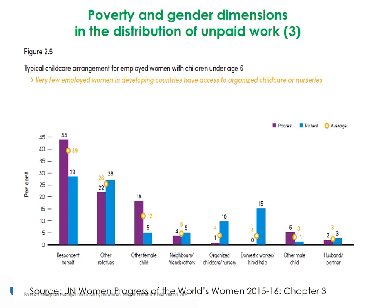Still on the theme of how income and gender intersect, this figure shows typical childcare arrangements for employed women with children under the age of 6. In general, few employed women in developing countries have access to organised care. What is striking, however, is the difference between the poorest and the richest women — about 44% of women in the poorest group look after their own child, compared to 29% of women in the richest quintile. About 25% of women in the richest group send their child to nursery or have a domestic helper, compared with almost none in the poorest group.